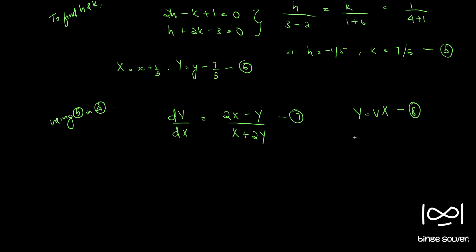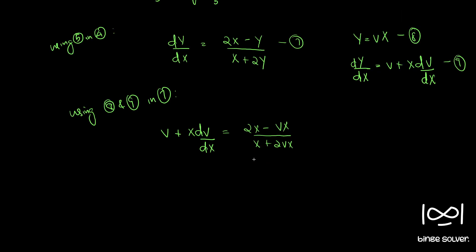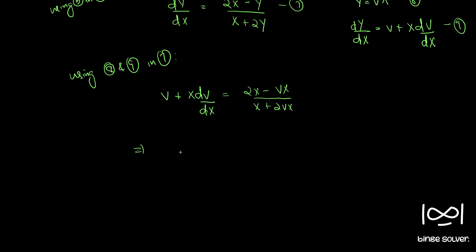For homogeneous equations we use the substitution Y equals vX — let's call this Equation 8. Differentiating Equation 8 with respect to X we have dY/dX equals v plus X dv/dX. Substituting into Equation 7 and canceling X from numerator and denominator and bringing v to the right-hand side, we have X dv/dX equals (2 minus v) by (1 plus 2v) minus v.